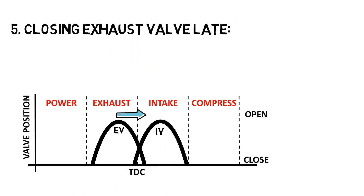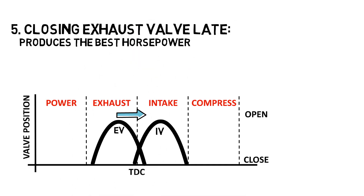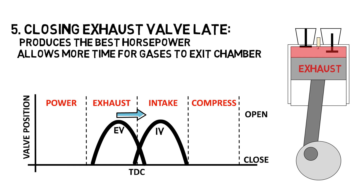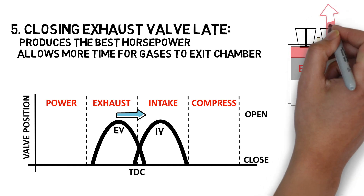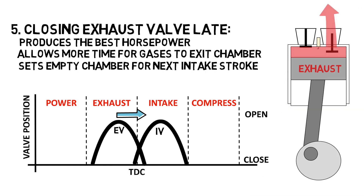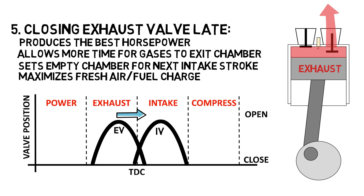Closing the exhaust valve late produces the best horsepower by allowing more time for the combustion gases to completely exit the chamber. This sets an empty chamber for the next intake stroke, maximizing the fresh air fuel charge.